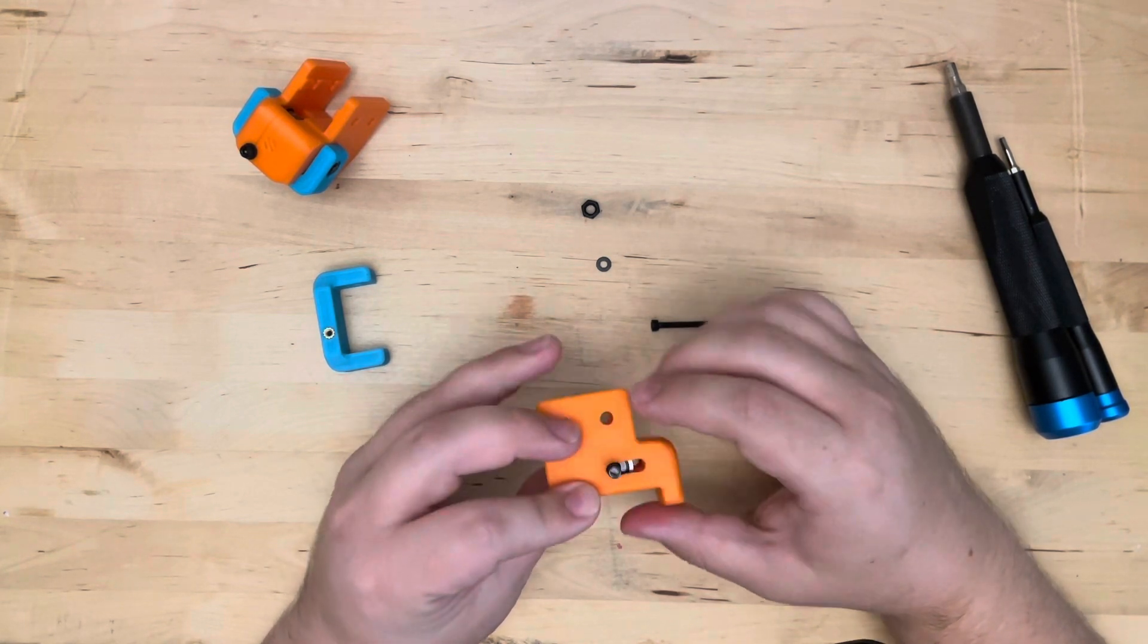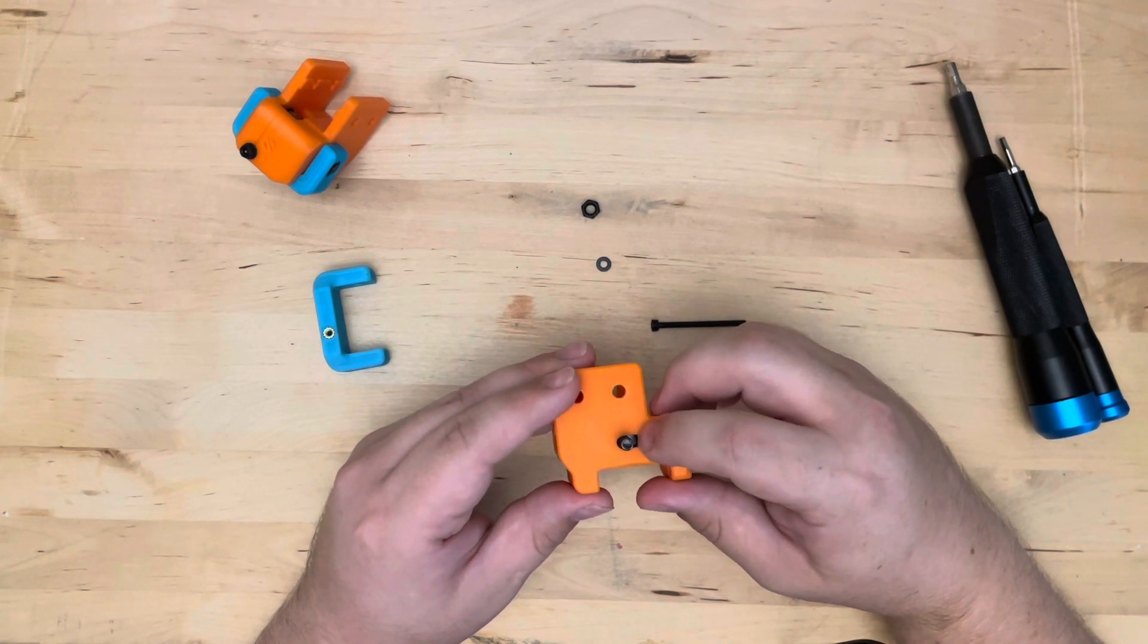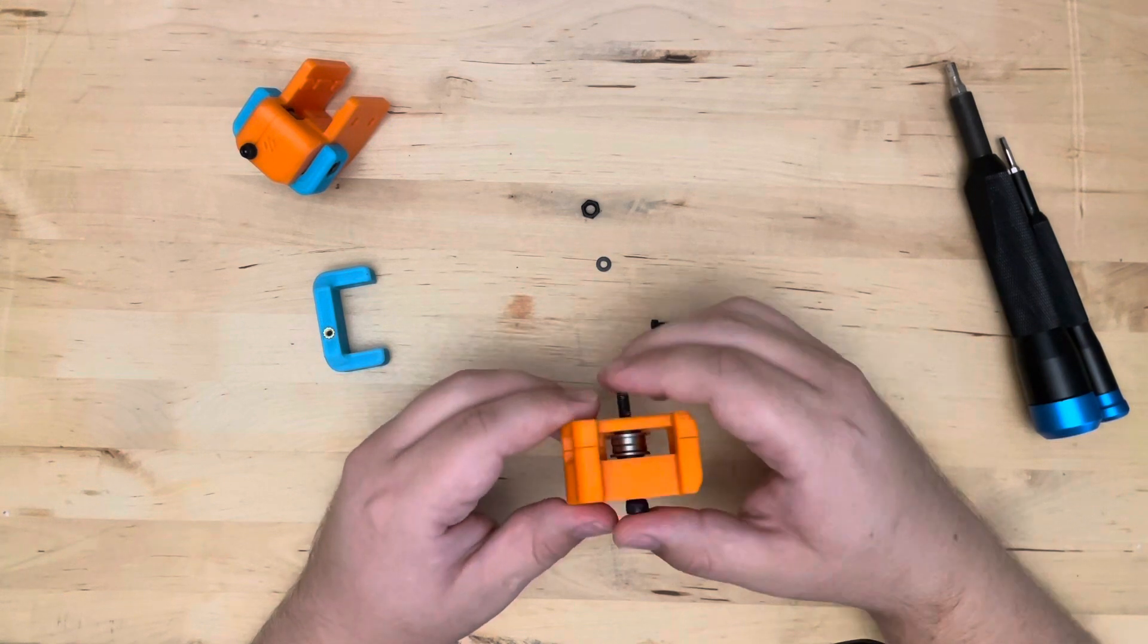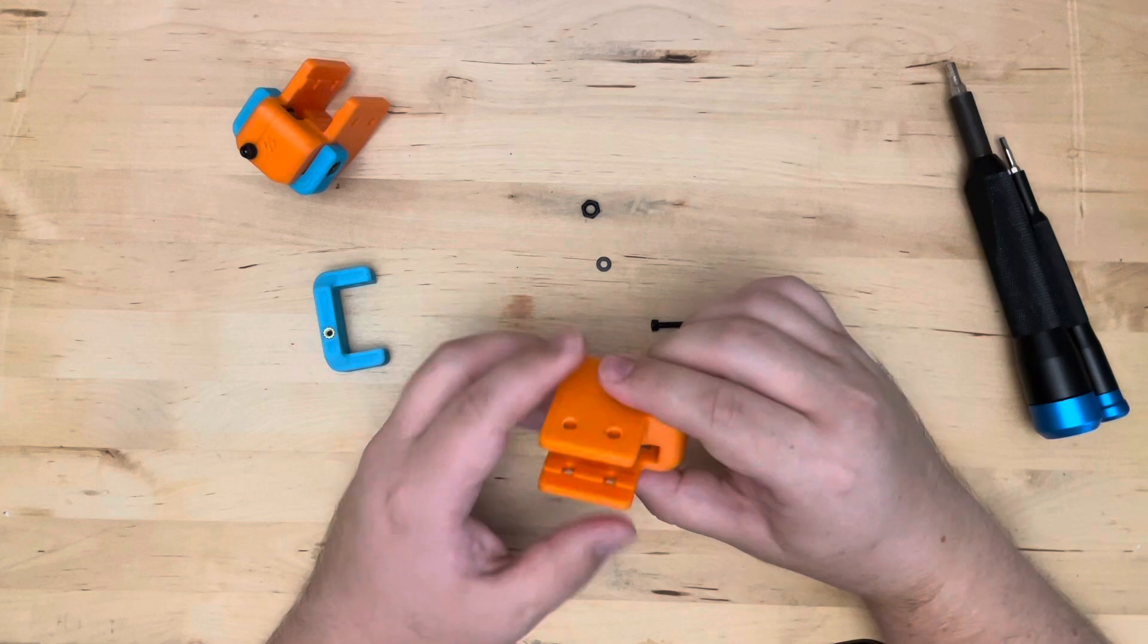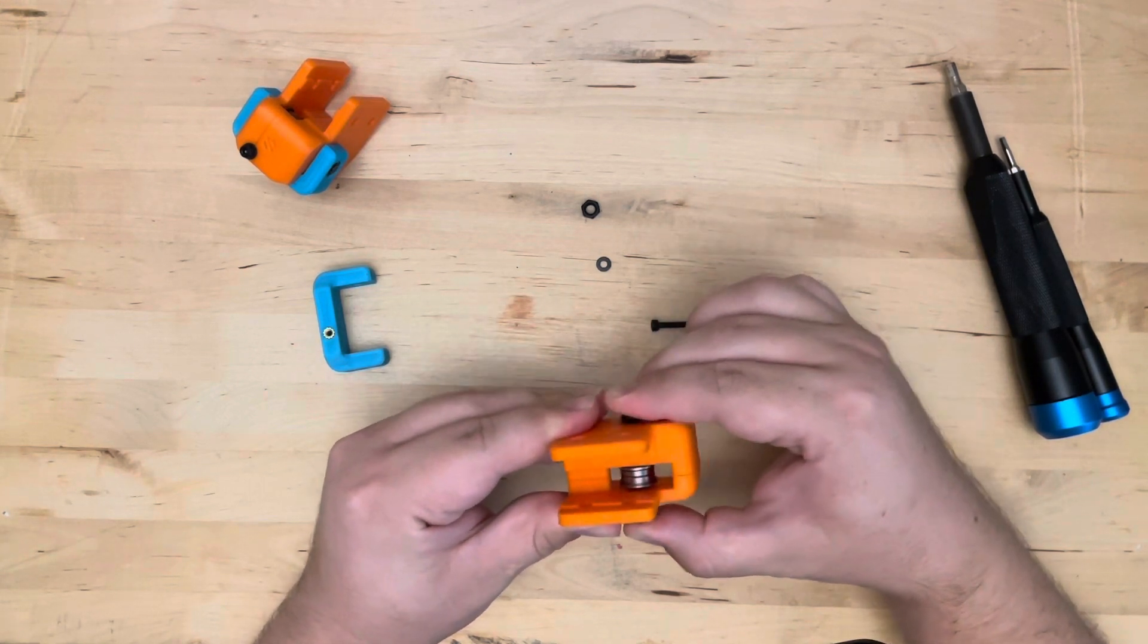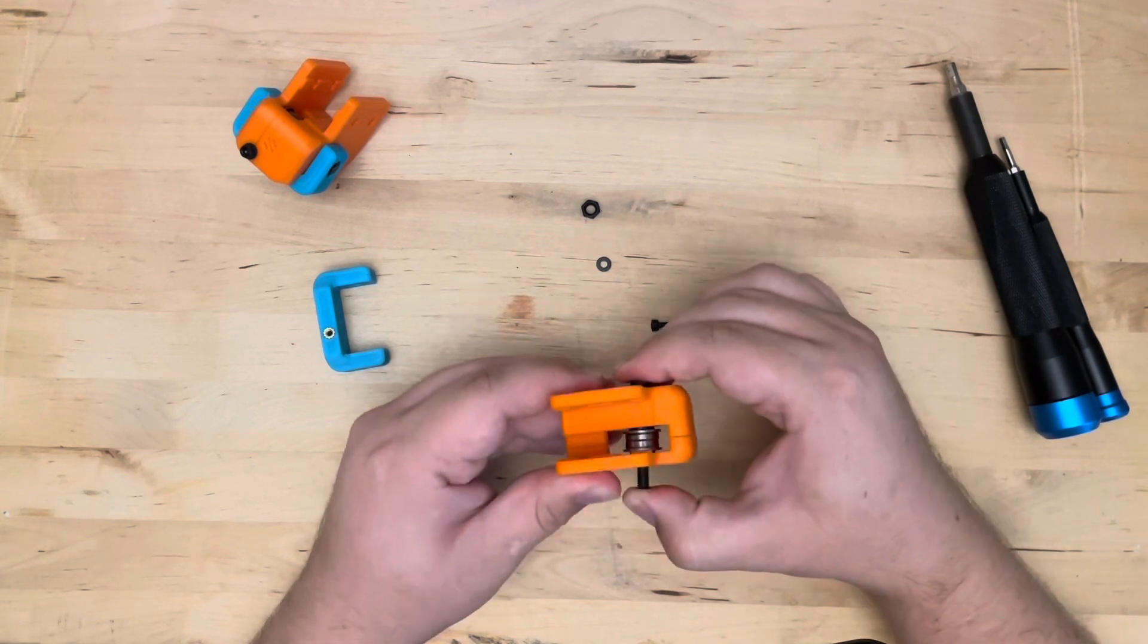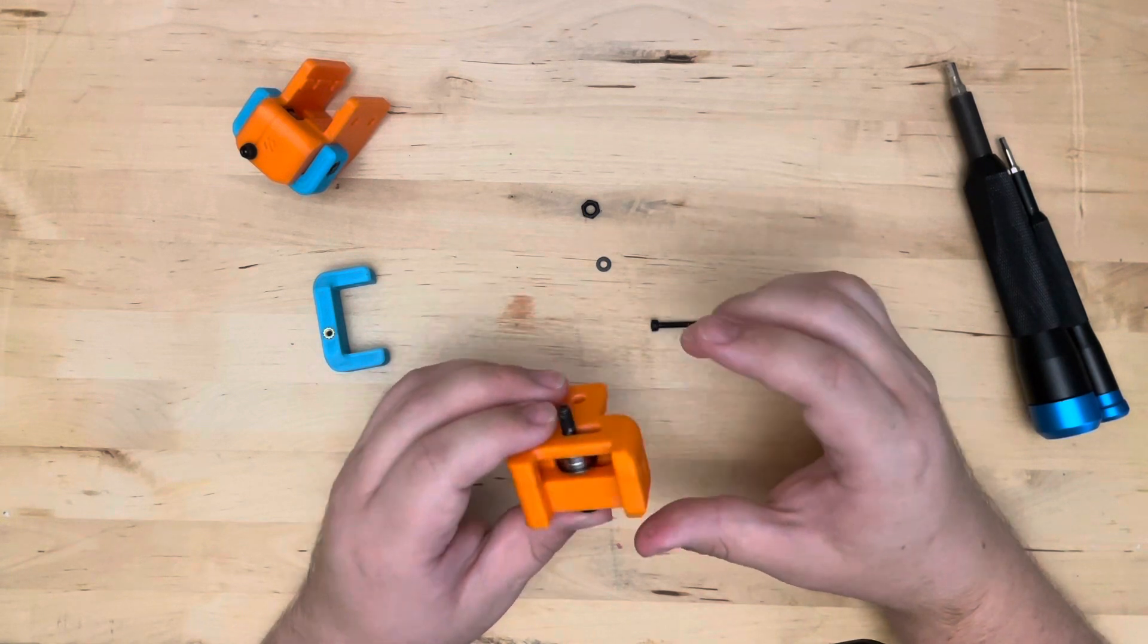One thing you may want to do is just go with a file or a craft knife and trim out a bit of plastic here on the sliders if you find, or in these slots. If you're finding that you can't slide this assembly very easily, it should move fairly freely. Ideally. I didn't mean to rhyme there.